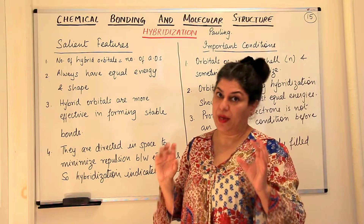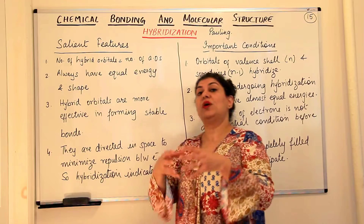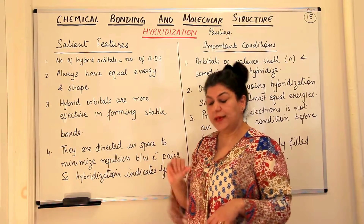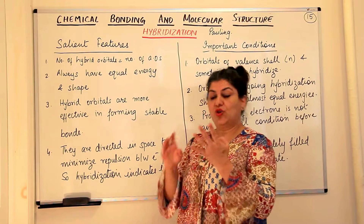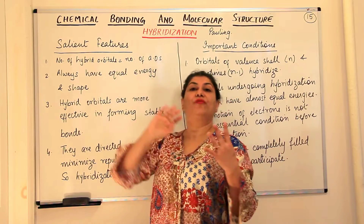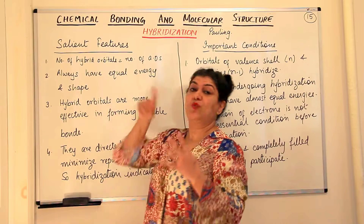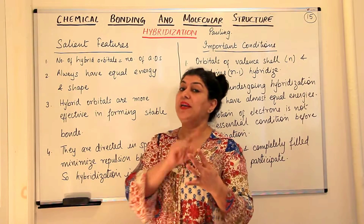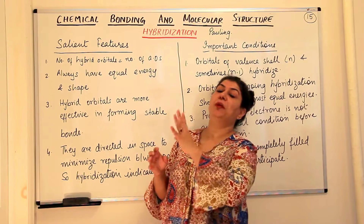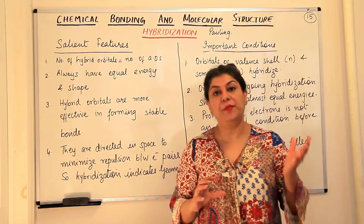The first important characteristic of hybridization is that the number of hybrid orbitals formed is exactly equal to the number of atomic orbitals that combine. For example, if 1 s orbital and 3 p orbitals combine, that gives 4 atomic orbitals total. As a result of this hybridization of 4 atomic orbitals, you obtain exactly 4 hybrid orbitals. The s was spherical and the 3 p orbitals were along the x, y, and z axes, but the 4 resulting orbitals are identical in shape and energy — these are called the sp3 hybrid orbitals.